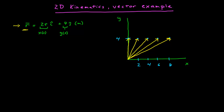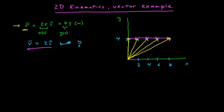We can calculate the velocity vector, which is the derivative of the position. The derivative of 2t is 2î, and the derivative of a constant is 0, so the velocity is 2î meters per second. The velocity is a constant. Representing that between the position points as average velocities, you can see the velocity is a constant vector over time — it only has an x component and points to the right.